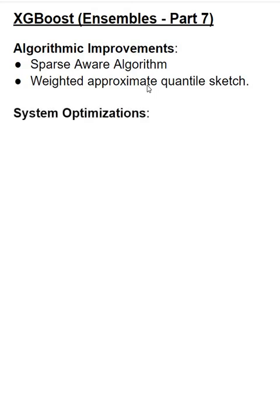Another category of improvements within XGBoost is system optimizations. The first system optimization is called out-of-core computing. For data which is very large and does not fit into main memory, XGBoost divides data into multiple blocks and stores each block on the disk. The blocks are compressed by the column and decompressed on the fly using an independent thread when read out of the disk.